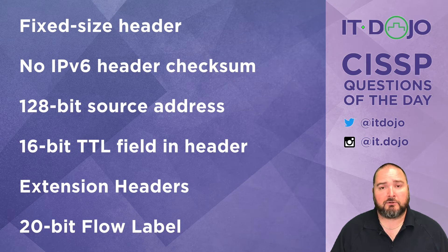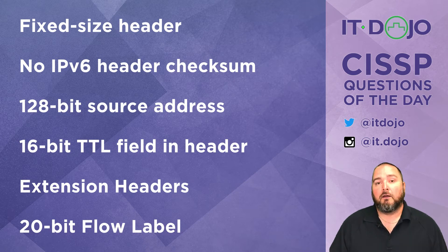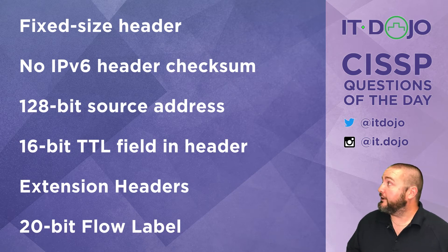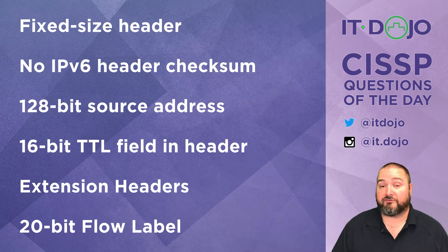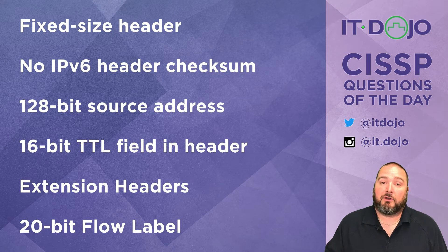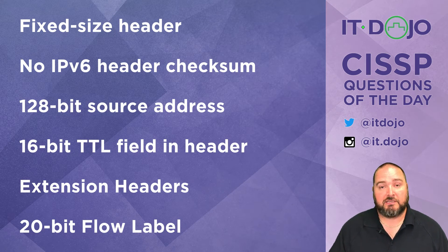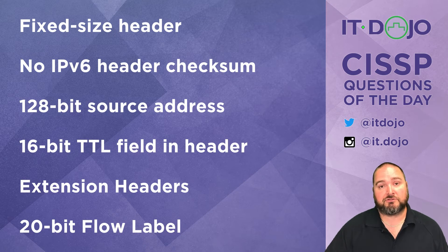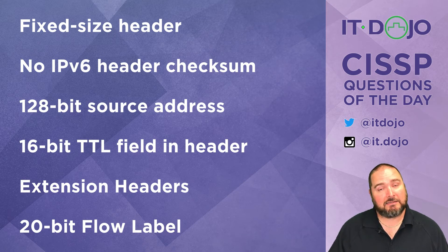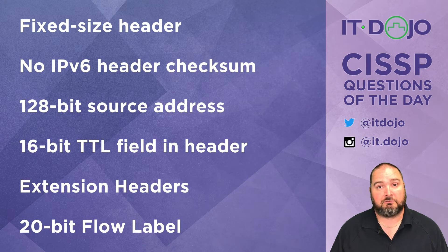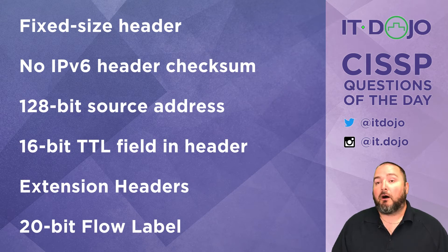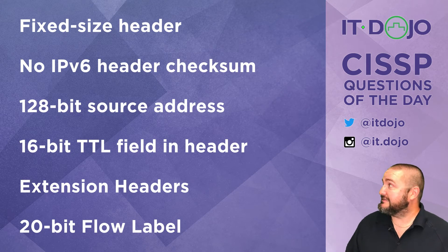128-bit source address — yes, that's probably the number one thing people know about IPv6: the addresses are 128 bits long. So the source IPv6 address is 128 bits and the destination IPv6 address is of course also 128 bits in length.